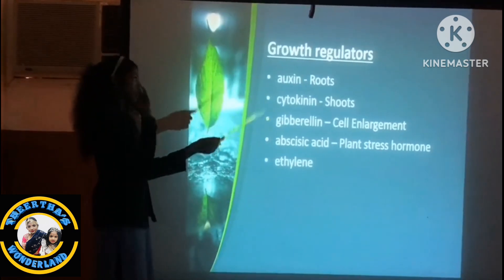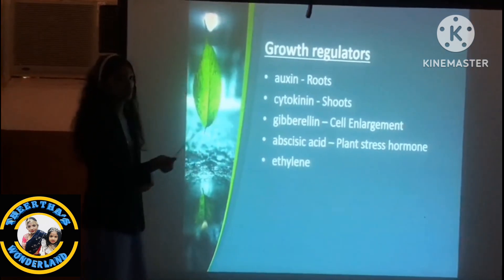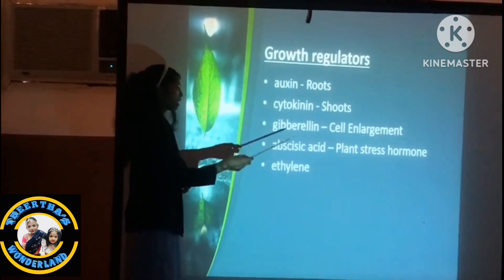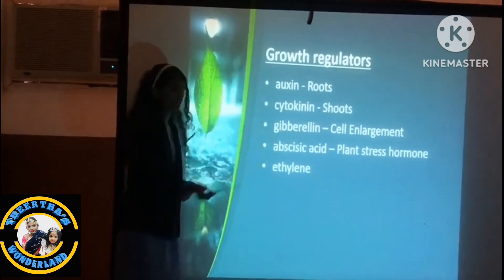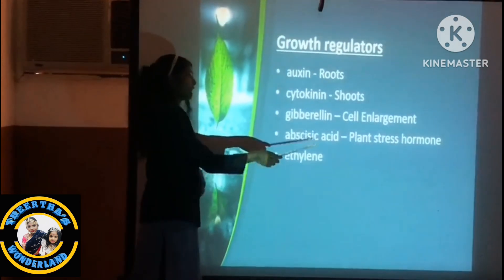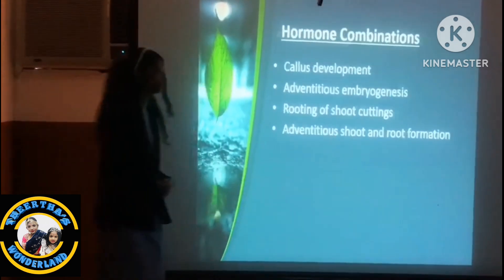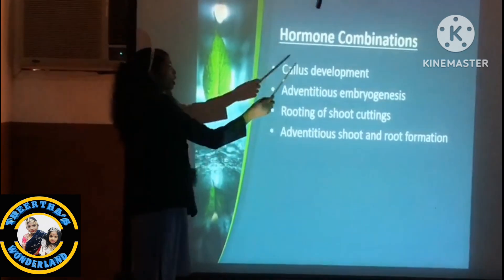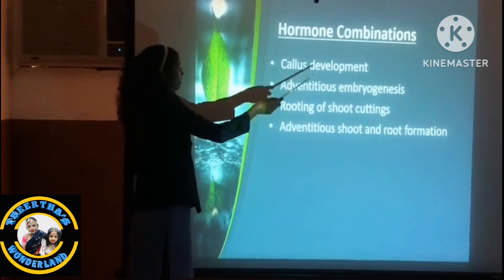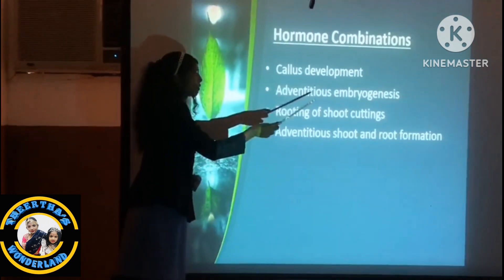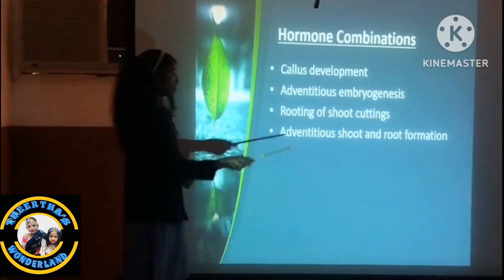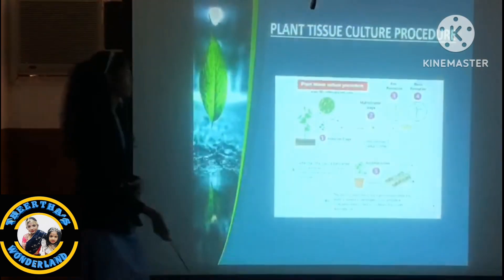These are the growth regulators. Auxin is used for root formation. Cytokinin is used for shoot formation. Gibberellin is used for cell enlargement. Abscisic acid is used as the plant stress hormone. The hormone combinations include callus development, induction of embryogenesis, rooting of shoot cuttings, and induction of shoot and root formation.